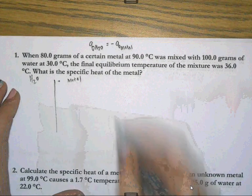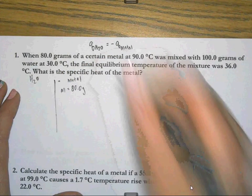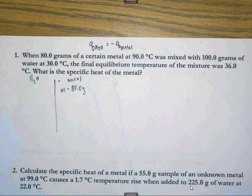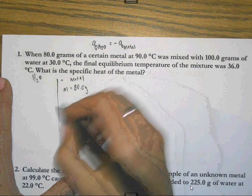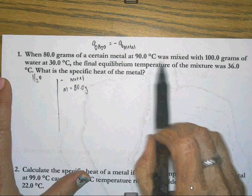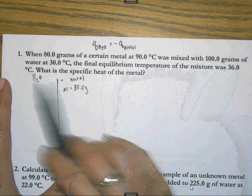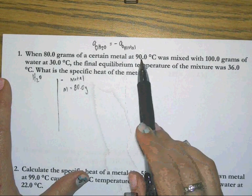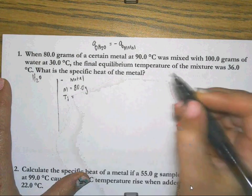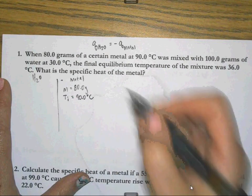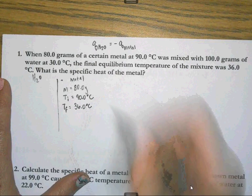For example, it says 80 grams of metal. Well, I know that grams measures mass. So I'm going to write down that I have m equals 80.0 grams. And it says that that metal was at 90 degrees Celsius. And if I keep reading for just a minute, it was mixed with water. And the final equilibrium temperature of the mixture was 36 degrees Celsius. What that means is that the metal started out at 90 and when it was put into the water ended up being 36. So that means the initial temperature of the metal was 90.0 degrees Celsius and the final temperature was 36.0 degrees Celsius.